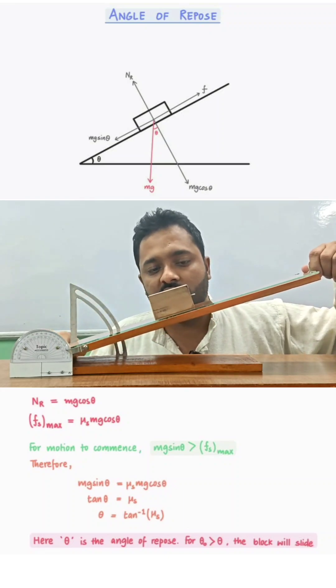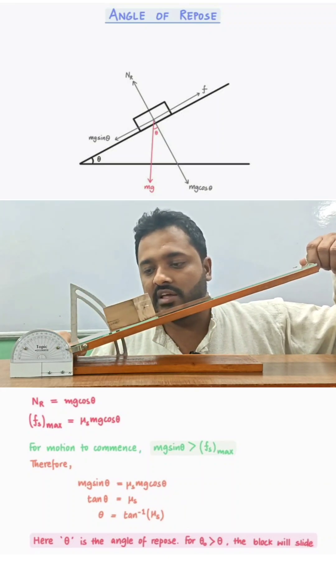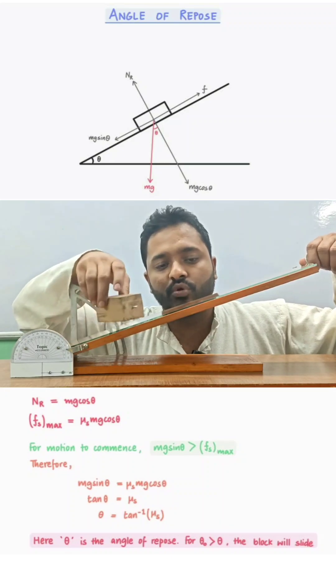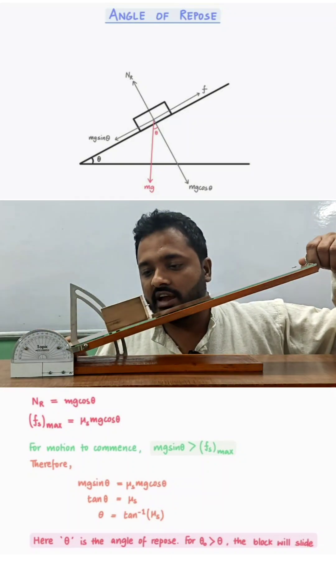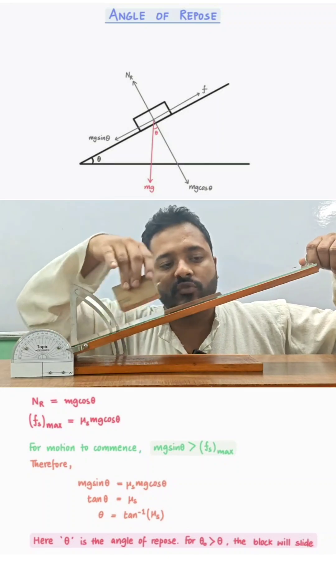If we increase this angle further, we can see that the block is sliding down due to its own weight. Let us check again. This is the angle at which the block slides down due to its own weight.